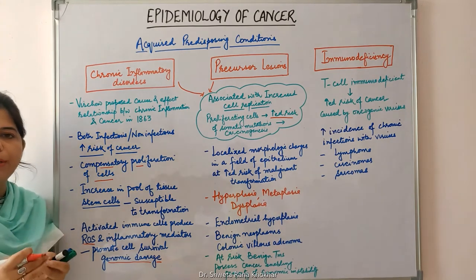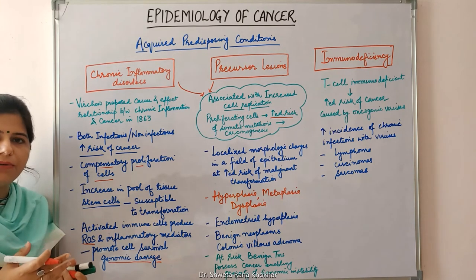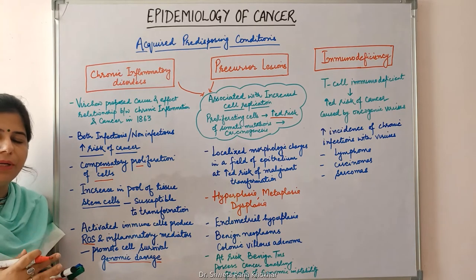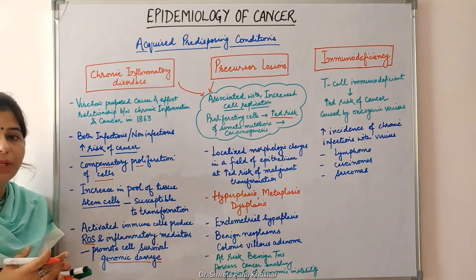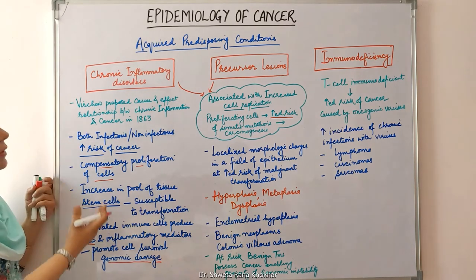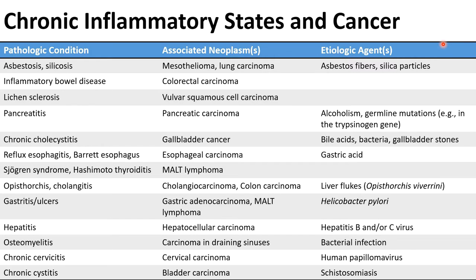Adequate treatment of these disorders can prevent the development of cancer. For example, H. pylori gastritis, if left untreated, can cause gastric carcinoma, but if adequately treated with antibiotics, development of carcinoma can be prevented. A table of chronic inflammatory states and associated neoplasms: asbestosis and silicosis are associated with mesothelioma and lung carcinoma. Inflammatory bowel disease is associated with colorectal carcinoma. Lichen sclerosis is associated with vulvar squamous cell carcinoma.